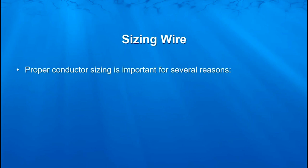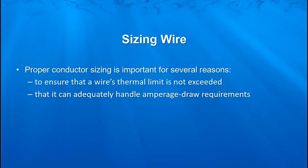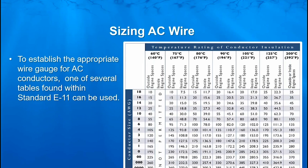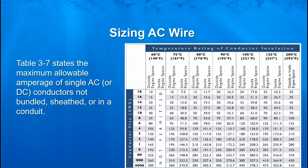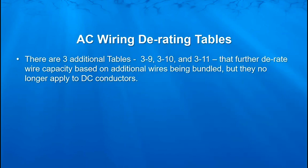Proper conductor sizing is important for several reasons. We need to ensure that we're not going to exceed the wire's thermal limit that it's rated for, that it can adequately handle the amperage draw requirement. And for DC conductors, that the wire does not exceed the voltage drop limits prescribed in standard E11. In sizing AC wire, we're going to use one of several tables found within standard E11. Table 3-7 gives us the maximum allowable amperage of a single AC — and in this case also DC — conductor that is not bundled, sheathed, or in a conduit. Table 3-8 gives us allowable amperages when we have up to three current-carrying conductors that are bundled, sheathed, or in a conduit.